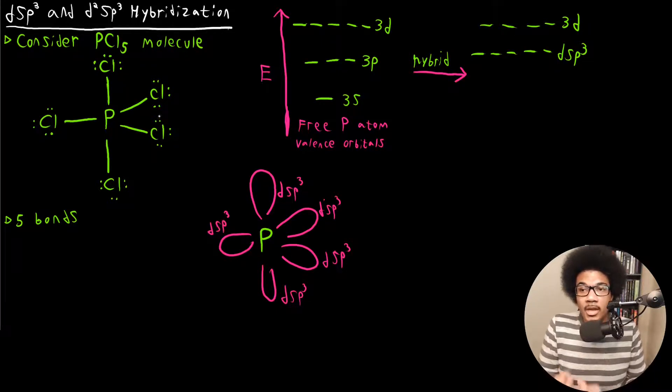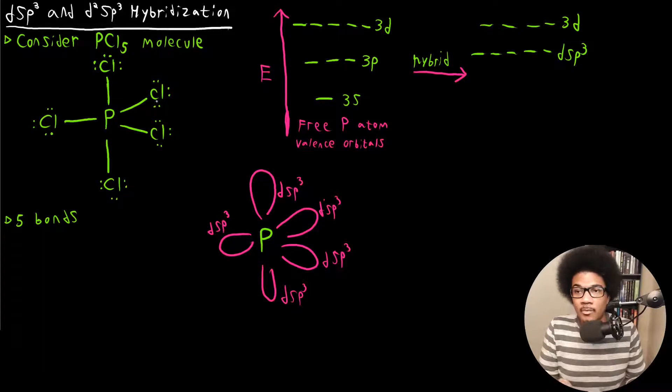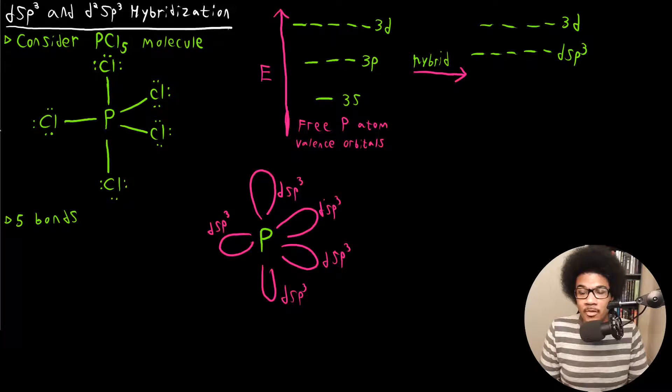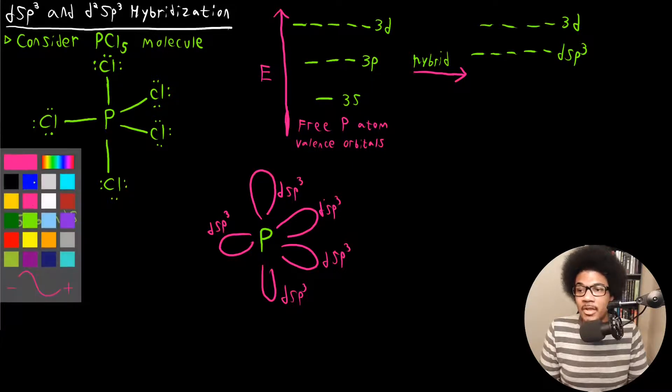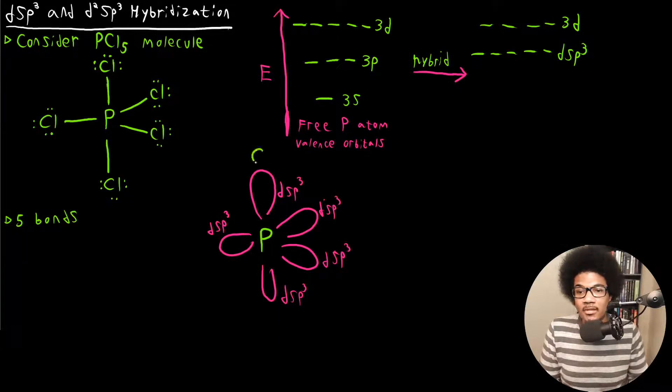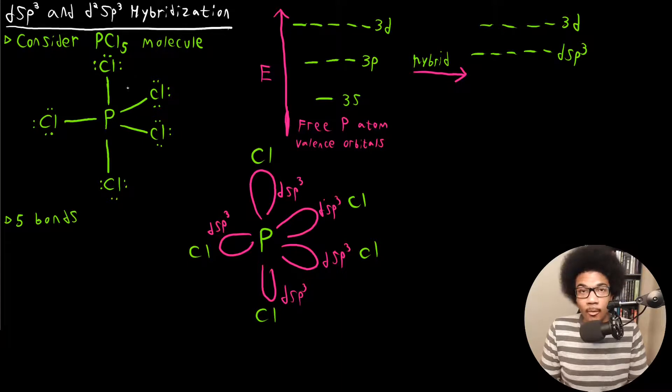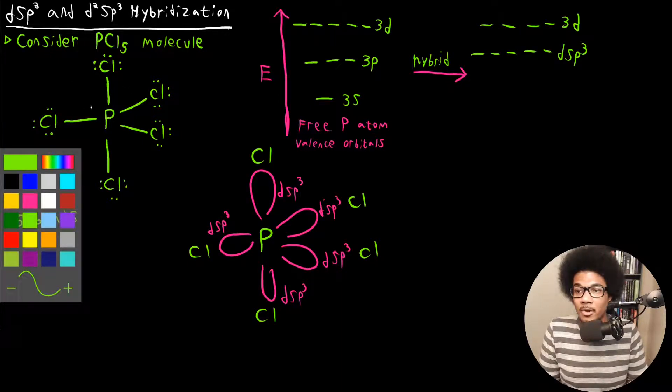Now, one thing that we should note here is that there is going to be hybridization at the chlorine center. So up to this point, we've kind of just had these hybrid orbitals interacting with hydrogen 1S orbitals, but chlorine is going to have its own hybridization going on. If you want to determine the hybridization, it's not just bonds that determine the hybridization, it's also lone pairs.